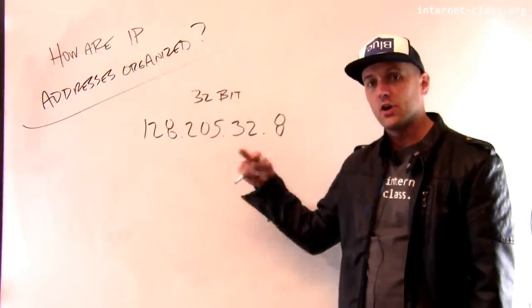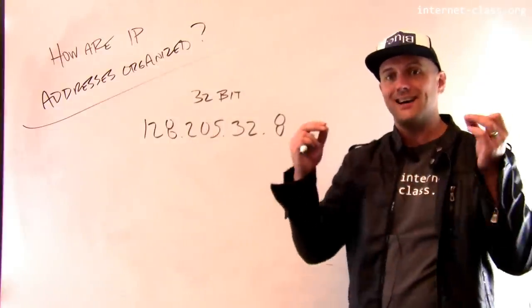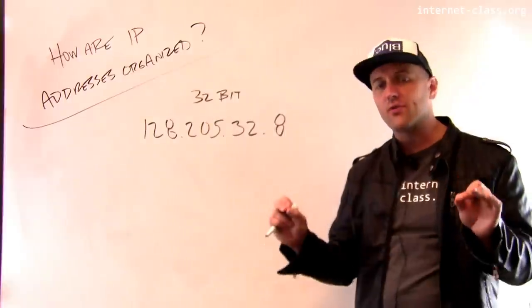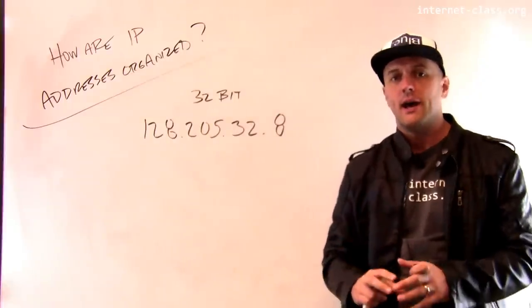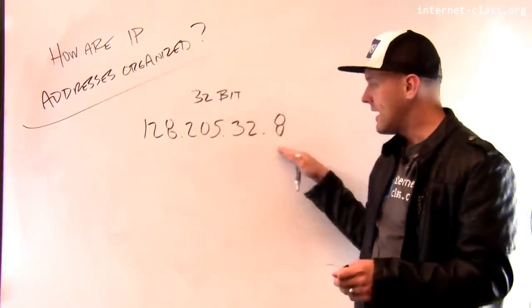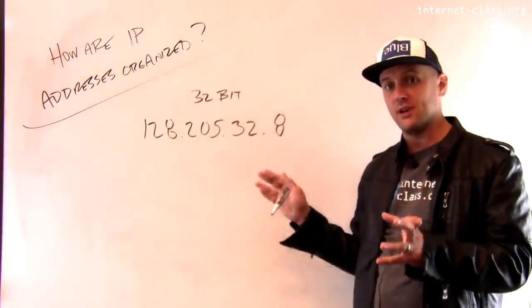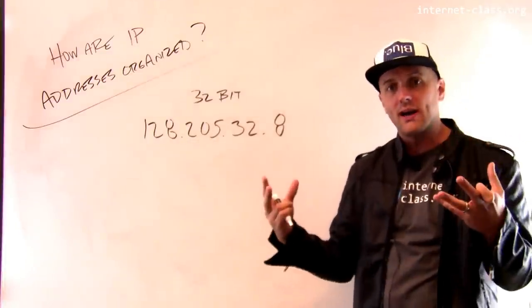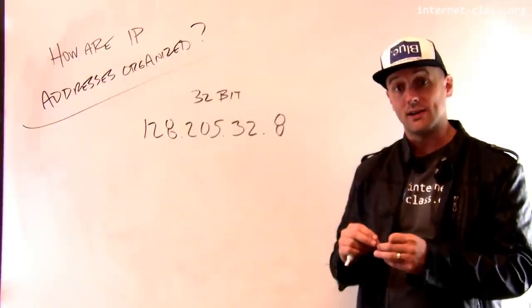core internet routers would have to have an entry in their routing table for every computer that was connected to the internet. And those routing tables would be huge and the routers would be very slow. So rather than routing every entry, every IP address separately, we organize the IP addresses hierarchically.